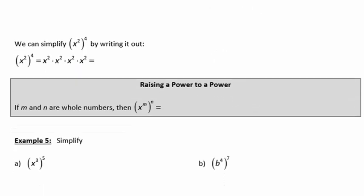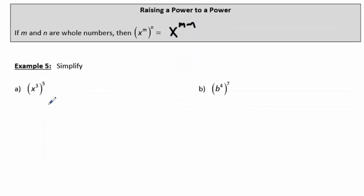The next property: if I have x squared to the 4th, that's x squared times x squared times x squared times x squared, or x to the 8th. So you can see that if I have two powers stacked on top of each other, I multiply them. If I have a power raised to a power, like x to the m to the n, that's x to the m times n. For example 5, x to the 3rd to the 5th becomes x to the 15th, and b to the 4th to the 7th becomes b to the 28th.